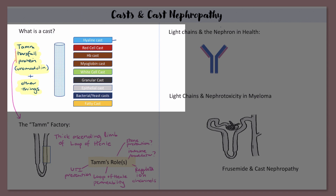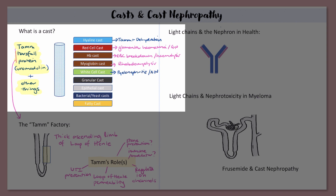First up is hyaline casts — these are just Tam all by himself. Hyaline casts can be seen in healthy people but they tend to occur in states of dehydration. Red cell casts may indicate glomerular hematuria or glomerulonephritis. Hemoglobin casts can happen either because you had a red cell cast that broke down, or due to intravascular hemolysis where you have free hemoglobin in the blood. Myoglobin casts can be seen in rhabdomyolysis. White cell casts can occur in pyelonephritis or interstitial nephritis, and rarely with glomerulonephritis.